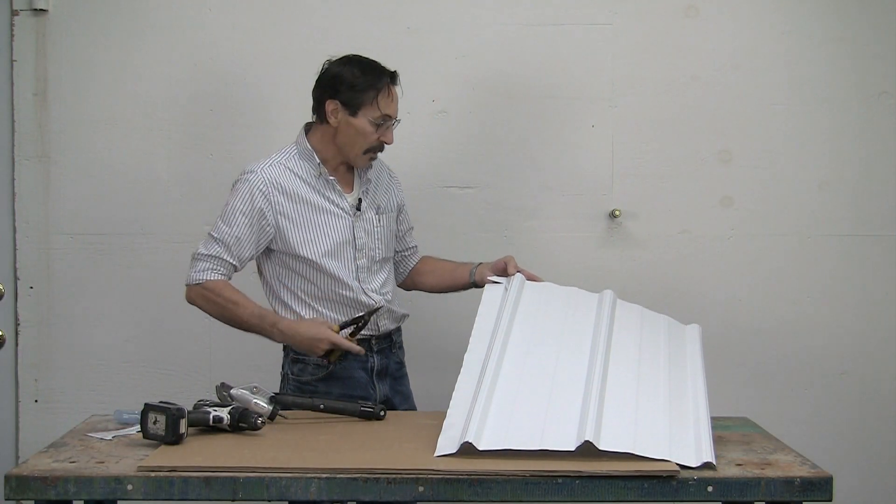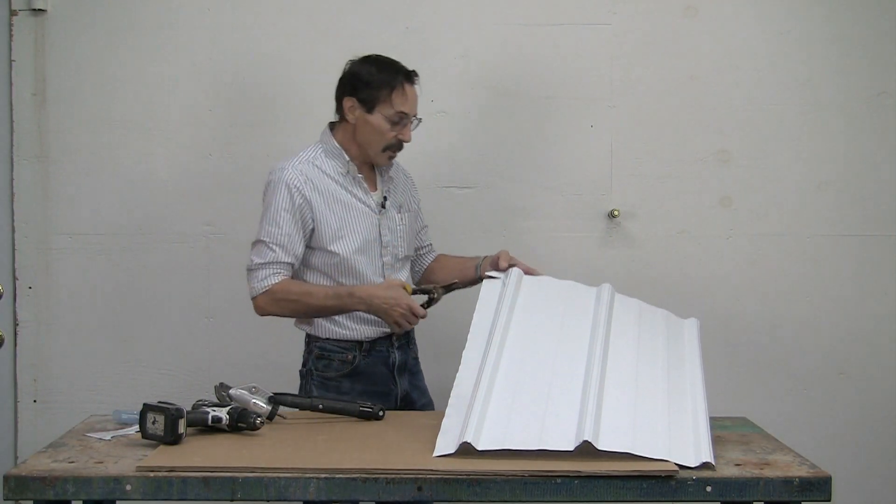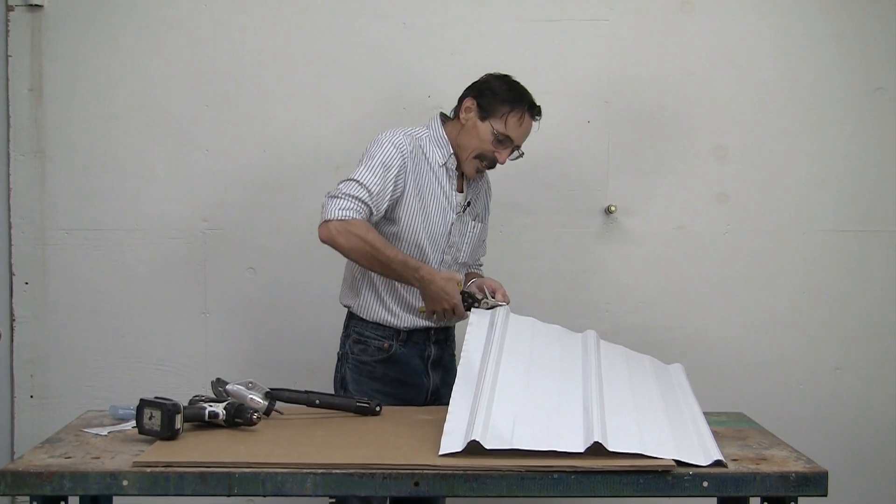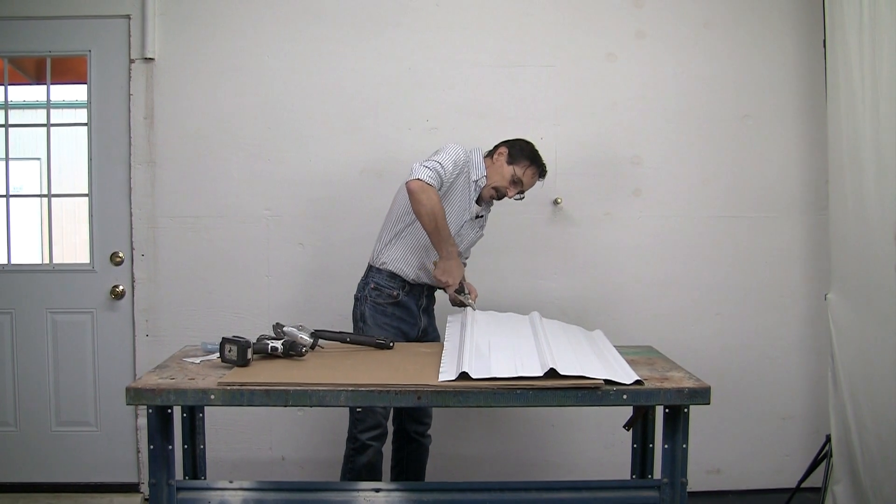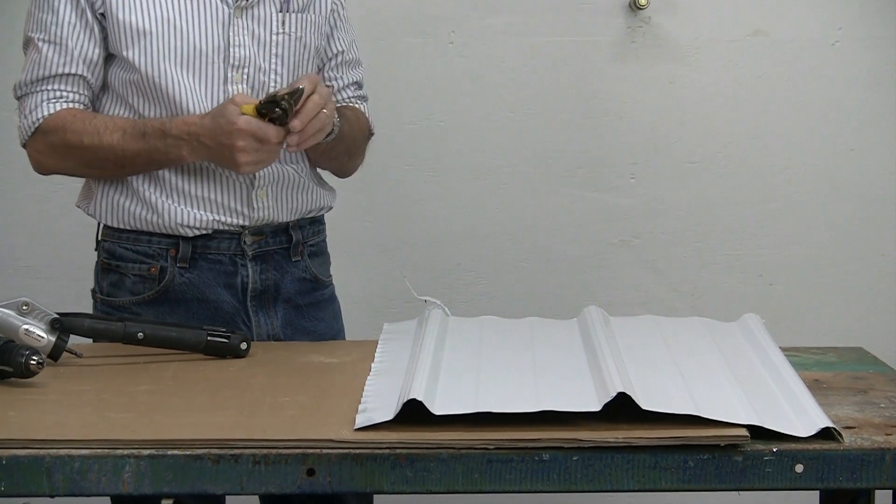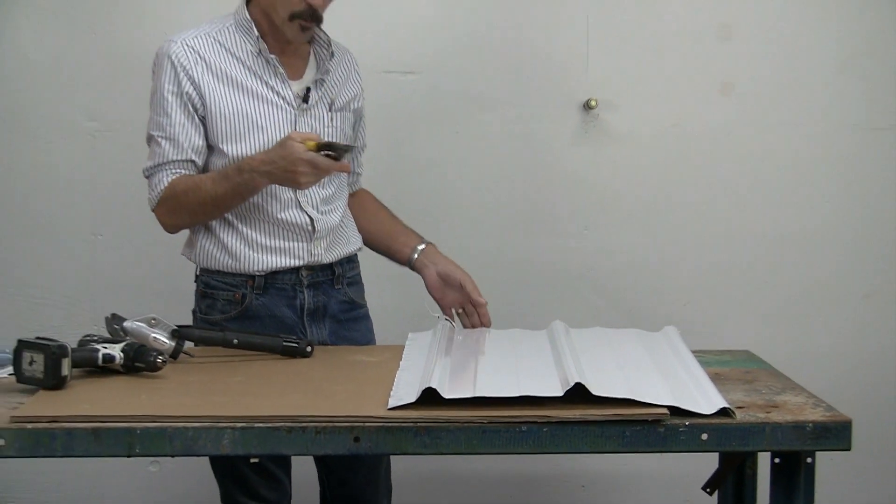There's another way to try to cut this stuff. You can use these tin snips and try that, and you guys have probably all did it. When you come to that rib and you're trying to cut out here in the middle of a sheet, it's a bummer. So I'm going to show you the way that I cut pole barn steel.